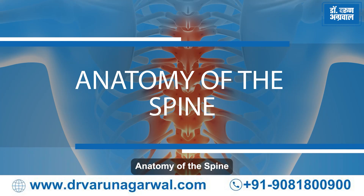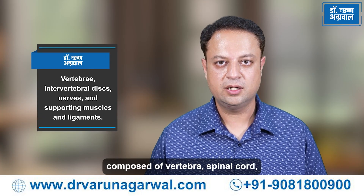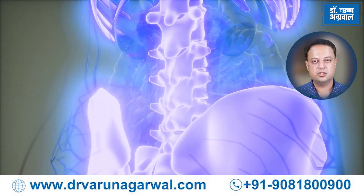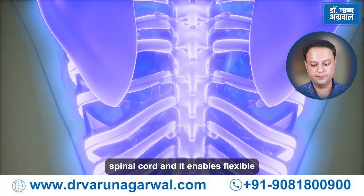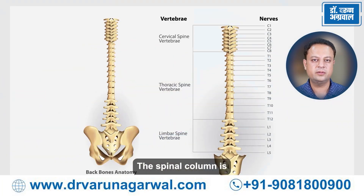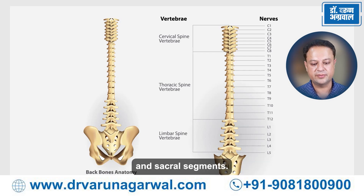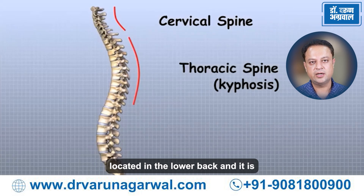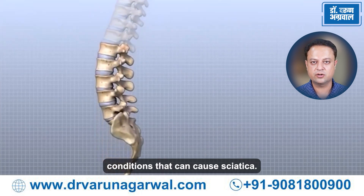Anatomy of the Spine. The spine is a complex structure composed of vertebrae, spinal cord, discs, nerves and muscles which support the spine. The spine provides structural support to the body, protects the spinal cord, and enables flexible movement. The spinal column is divided into cervical, thoracic, lumbar and sacral segments. The lumbar region is located in the lower back and is particularly susceptible to various conditions that can cause sciatica.